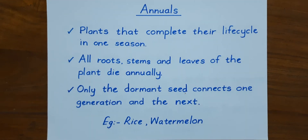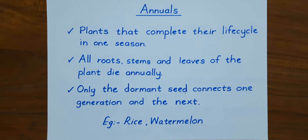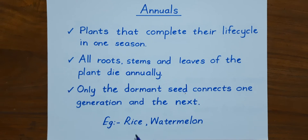Annuals are the plants that complete their life cycle in one season. All the roots, stems, and leaves of the plant die annually. Only the dormant seed connects one generation and the next. Examples of annuals are rice and watermelon.